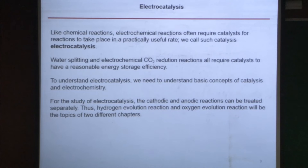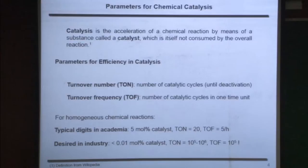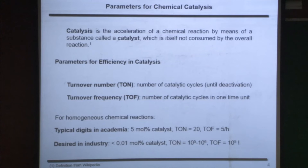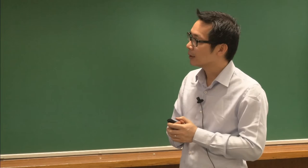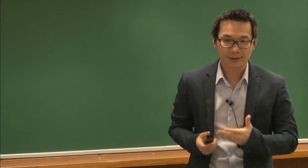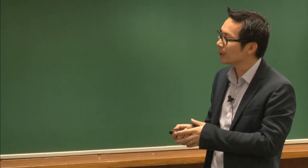Let's look at what catalysis is. The first line is the definition from Wikipedia — it's not a strict definition, but you get the idea. It's basically to accelerate a reaction without consuming itself. That's a catalyst; the phenomenon is called catalysis. When talking about efficiency in catalysis, you talk about turnover numbers — how long you can run a catalytic cycle before the catalyst is deactivated — and turnover frequency, which is how fast it runs, per second or per hour.